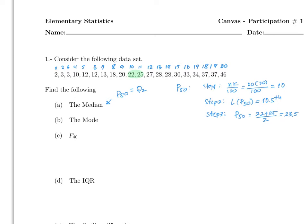Now the mode is the value that repeats the most. We have two 12s and two 37s and two 3s — do we have any that repeats three times? No. So therefore the mode is none. If no single value repeats the most, there is no mode. If one number repeats itself more than others, that number would be the mode.